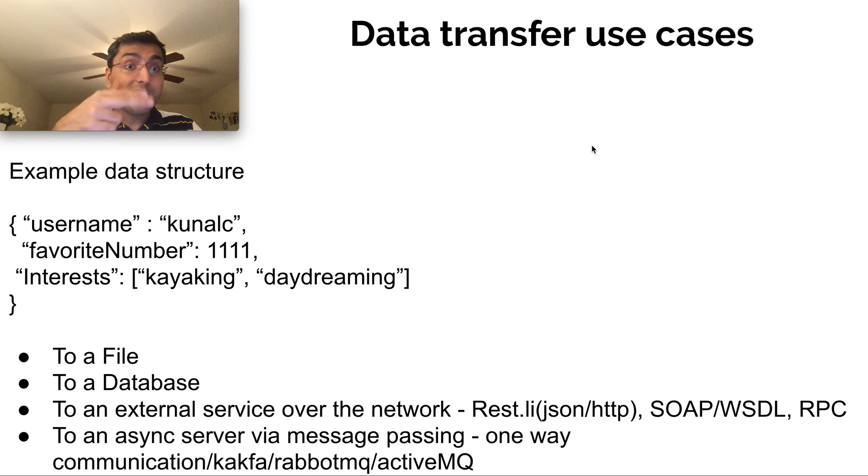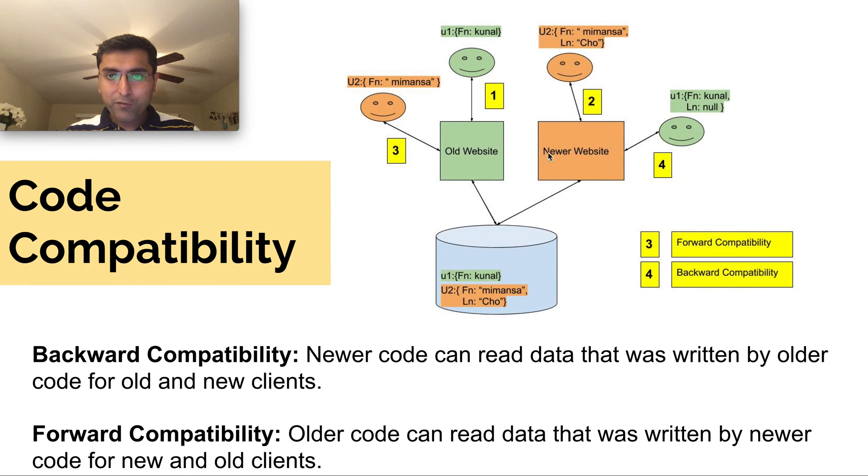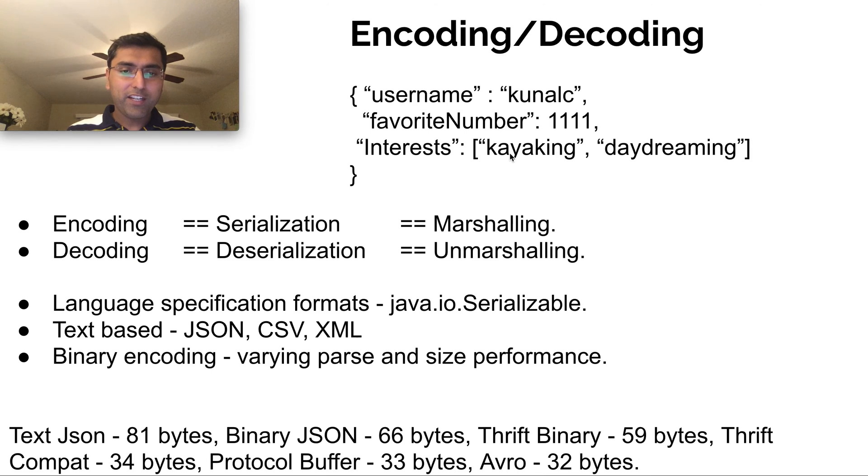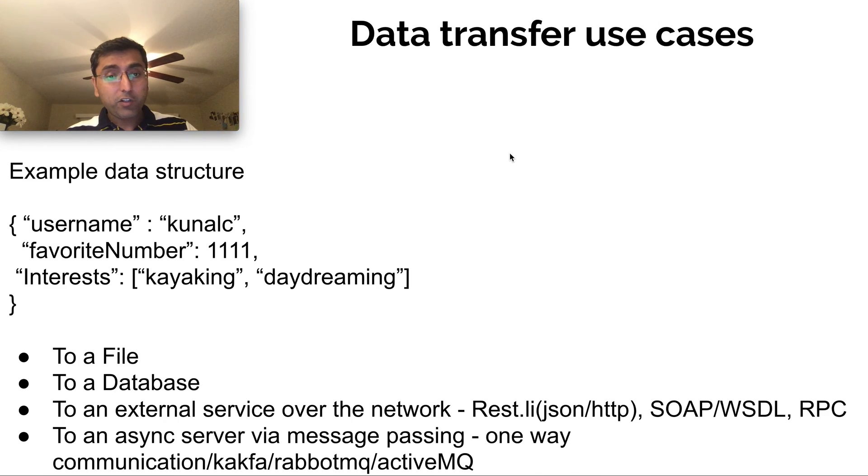You can also call external services, like using, let's say, RESTli is also an RPC-based JSON over HTTP protocol that LinkedIn has come up with. And there are many ways in which service communications also happen. So you can think about this web service talking to this web service, and that was the service-to-service communication. It could be within the data center, it could be even over the internet.